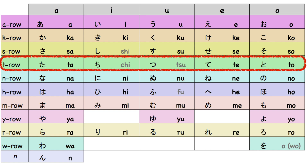Welcome back to Nihongo. In this lesson, we will learn the hiragana ta, chi, tsu, te, to. Notice that the ti syllable becomes chi and the tu syllable becomes tsu.